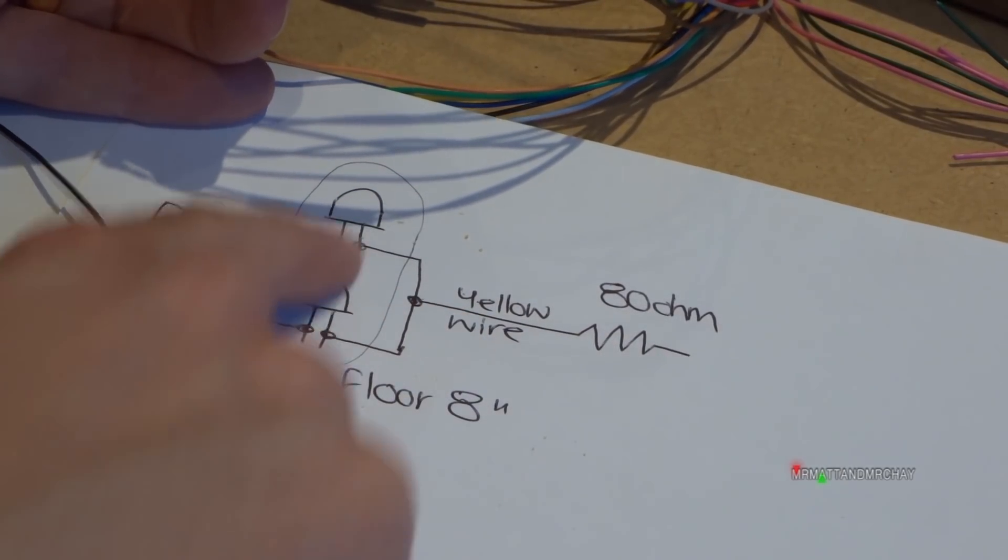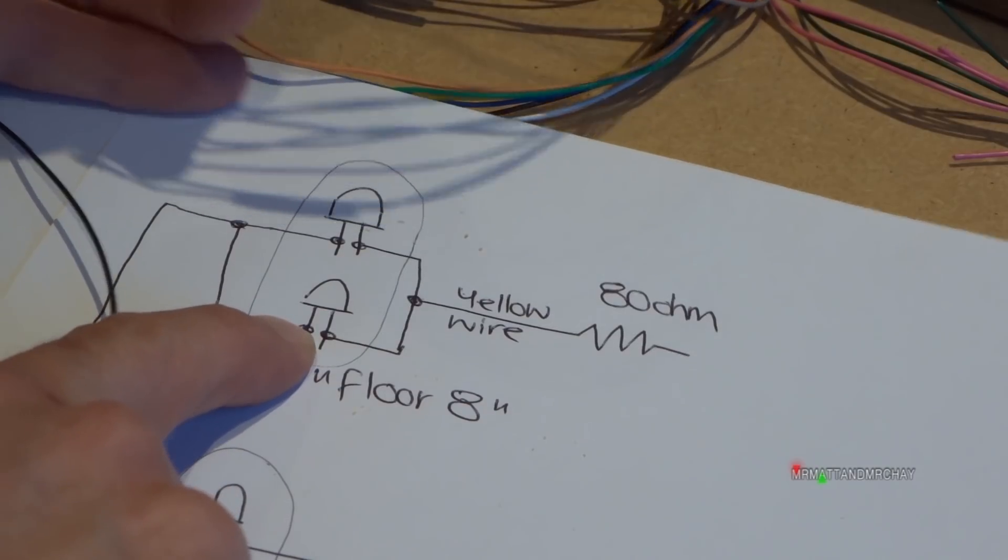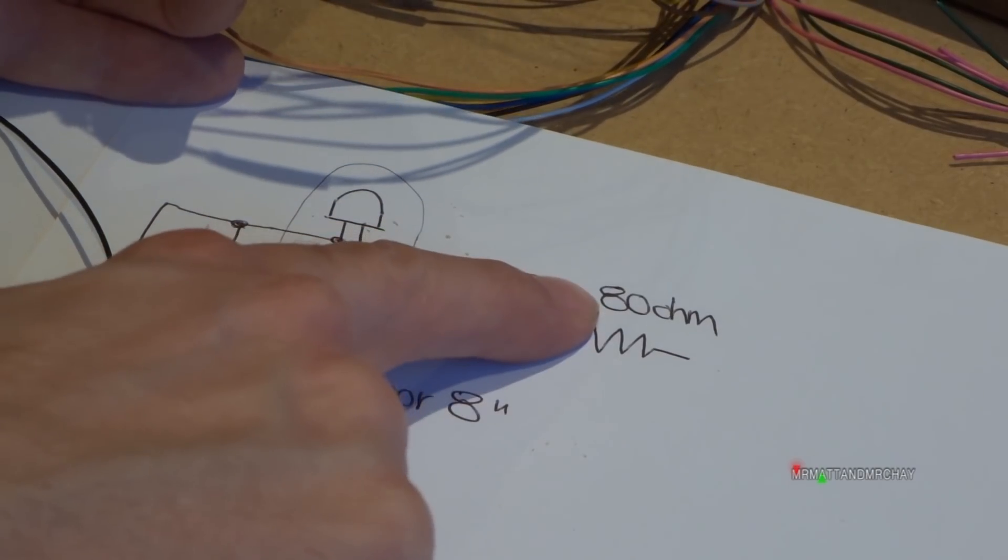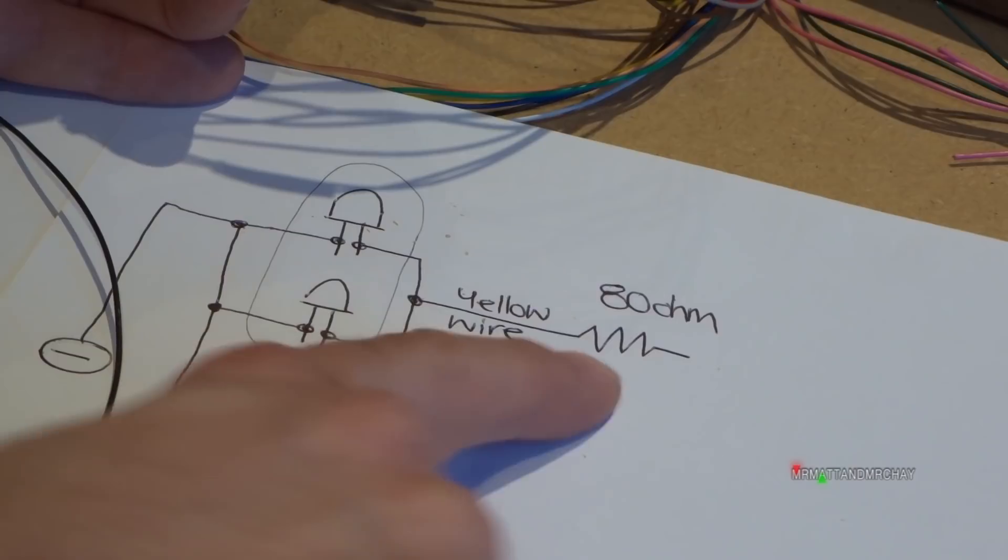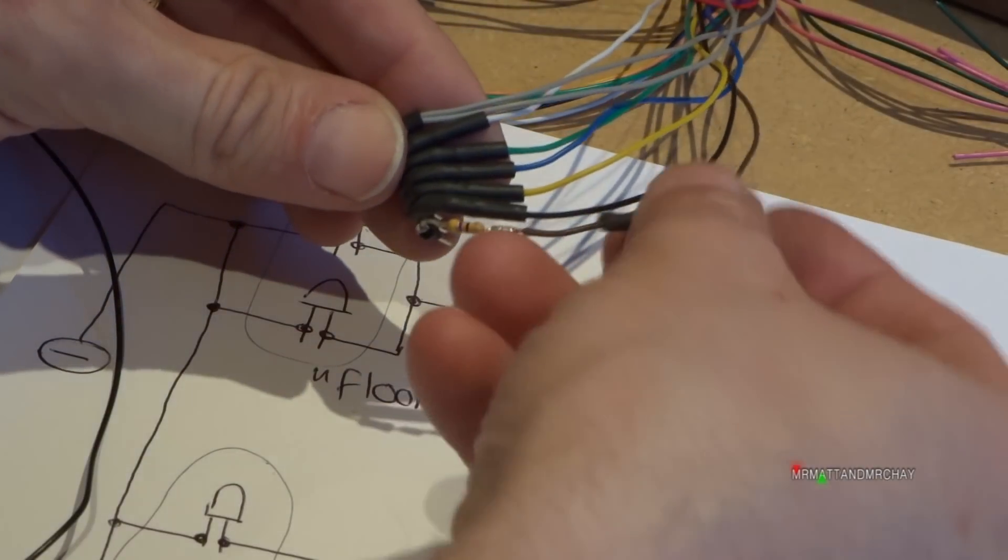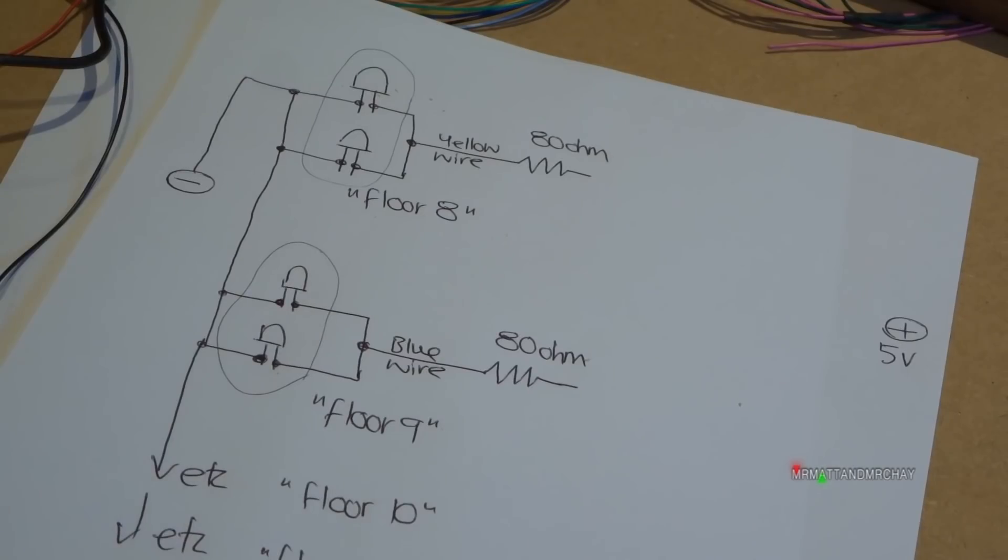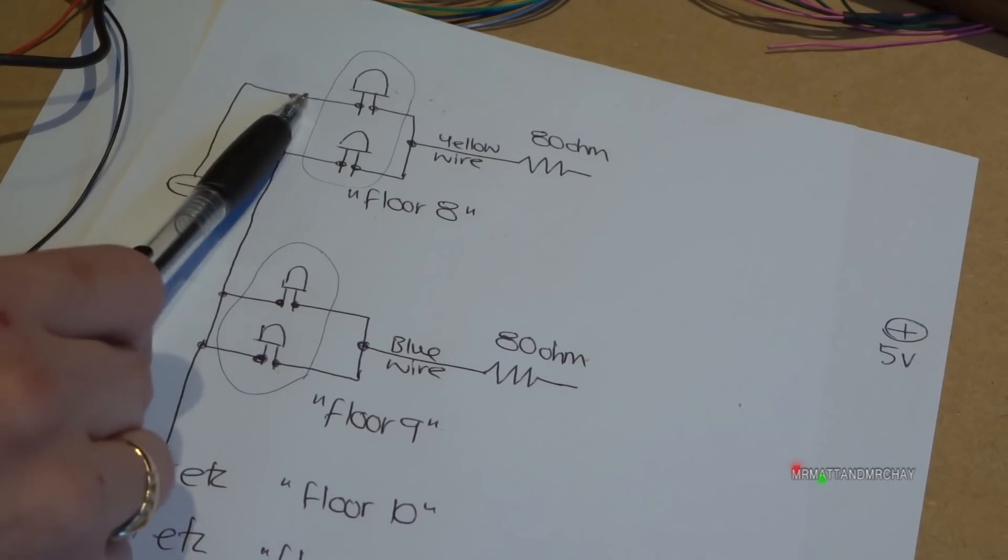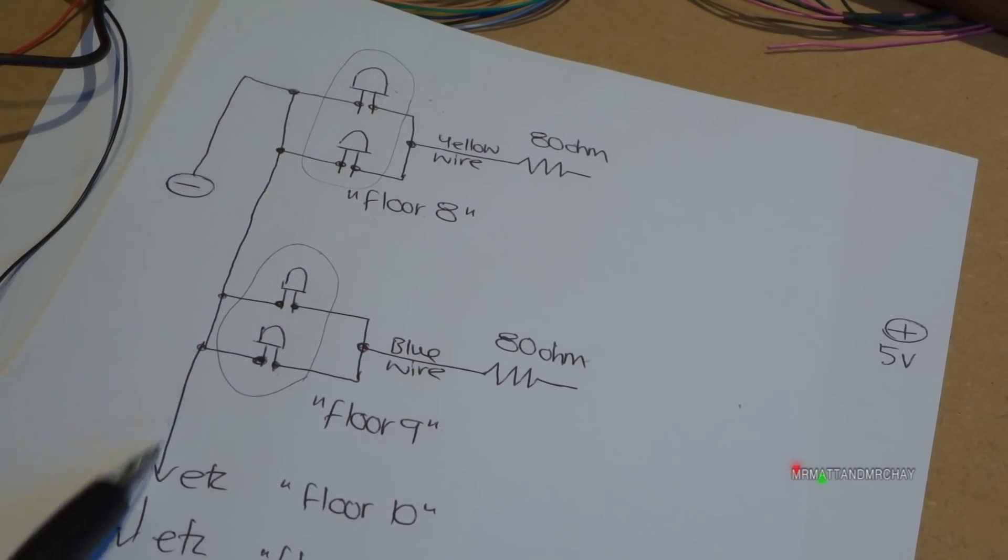So I had to put what I worked out to be an 80 ohm resistor in series there. This bit's already done. So we've got the common wire going through all the LEDs on the board.